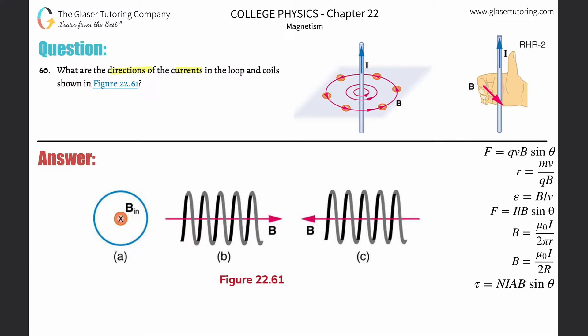Now we're talking about magnetic fields and trying to predict the current. Here you have a loop of wire, and it tells you that the magnetic field inside of that loop is pointing in.